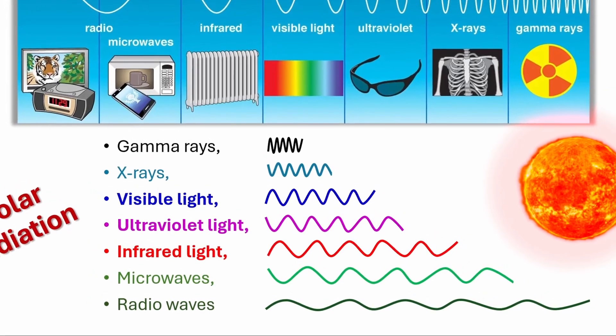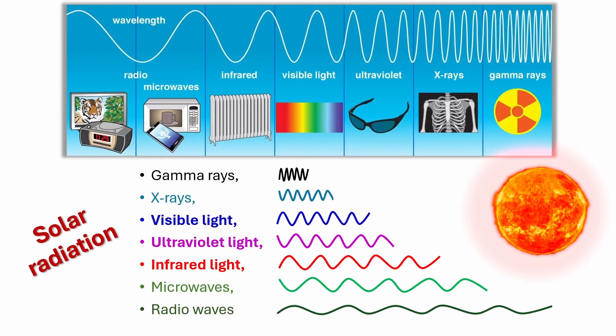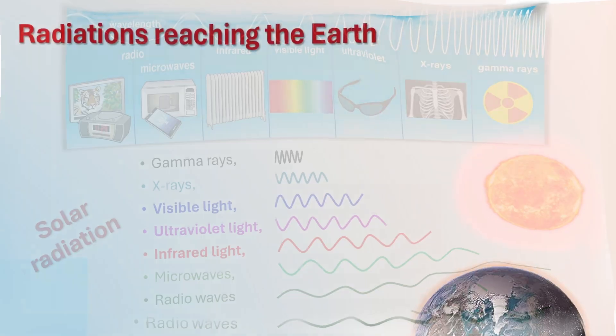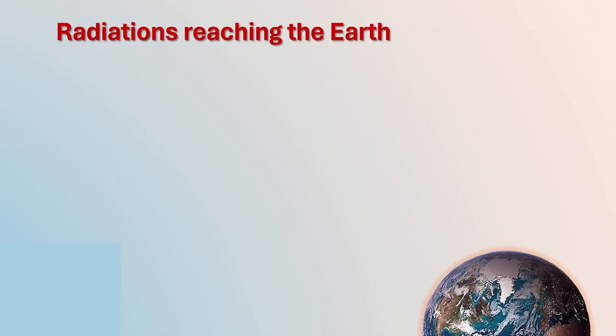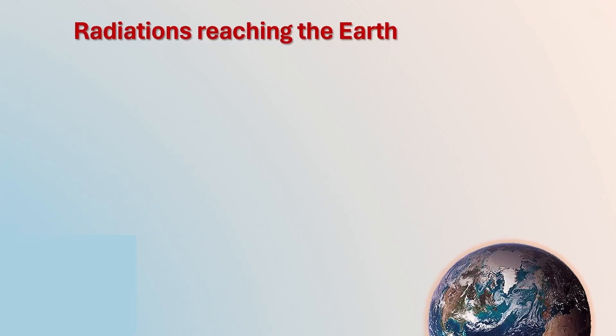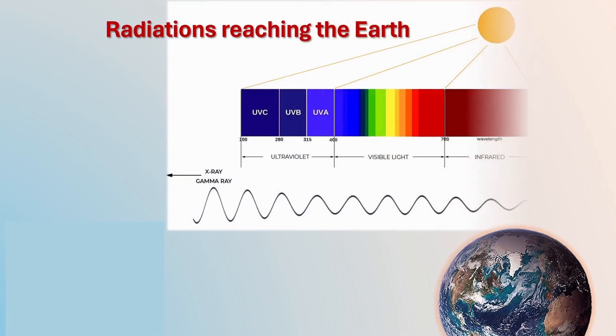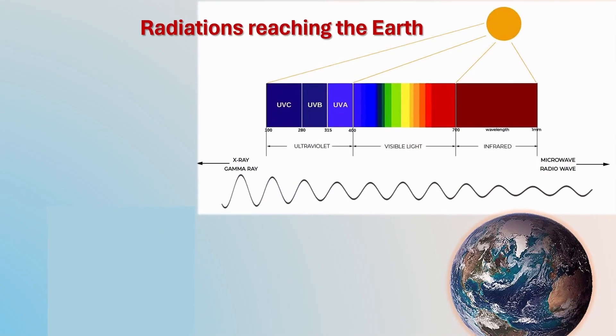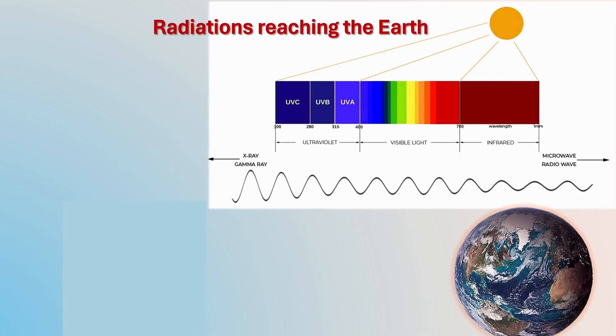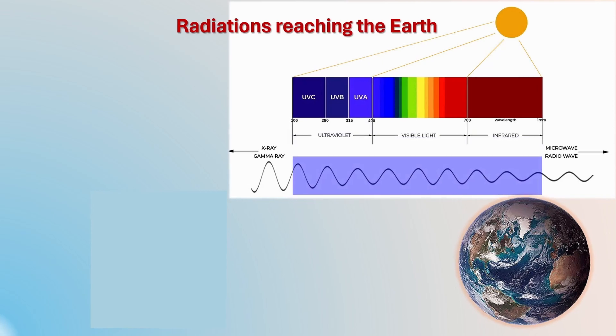Now, the question is among these energies, which energies actually reach the earth? Let us know different types of solar radiations that reach the earth's atmosphere. All the radiations emitted by the sun do not reach the earth's atmosphere. Most of the solar radiations that reach the earth's atmosphere have wavelengths from 100 nm to 1 mm.